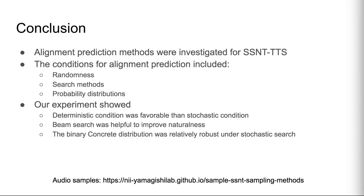In conclusion, we investigated alignment prediction methods for SSNT-TTS. The conditions included randomness, search methods, and probability distributions. Our experiment showed that deterministic conditions were more favorable than stochastic conditions. Beam search was helpful for improving naturalness, and the binary concrete distribution was relatively robust under stochastic search conditions. Thank you for listening.